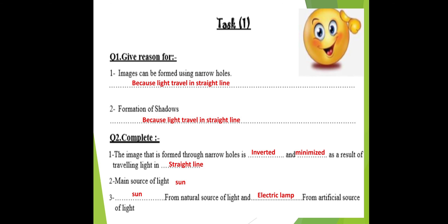Let's answer Task 1 in the booklet. Images can be formed using a narrow hole because light travels in a straight line. Shadow forms because light travels in a straight line. The image formed through a narrow hole is inverted and minimized — also a result of light traveling in a straight line. The main source of light is the Sun; natural sources include the Sun and stars; artificial sources include electric lamps. Thank you, Grade 5, see you in the next video!